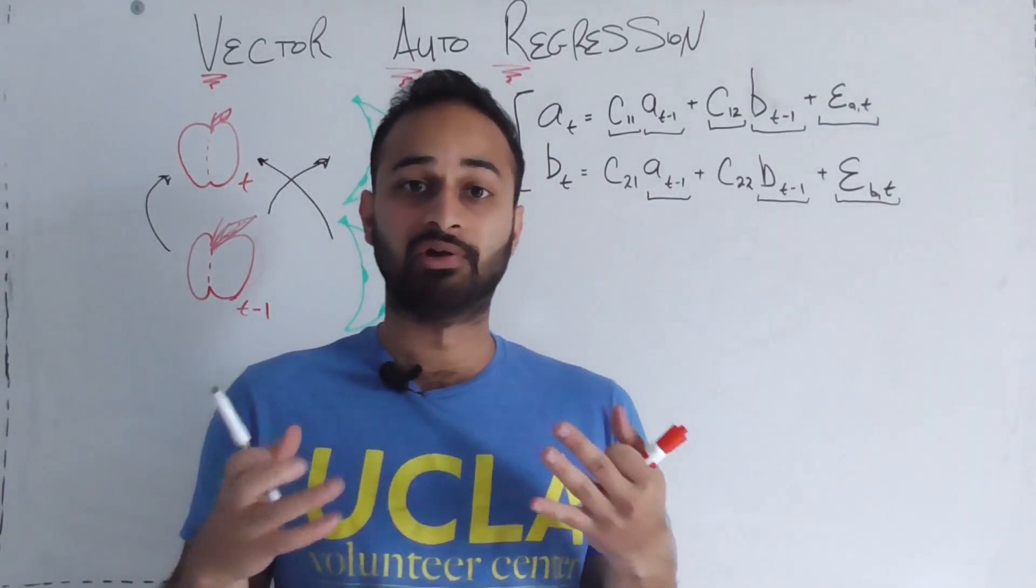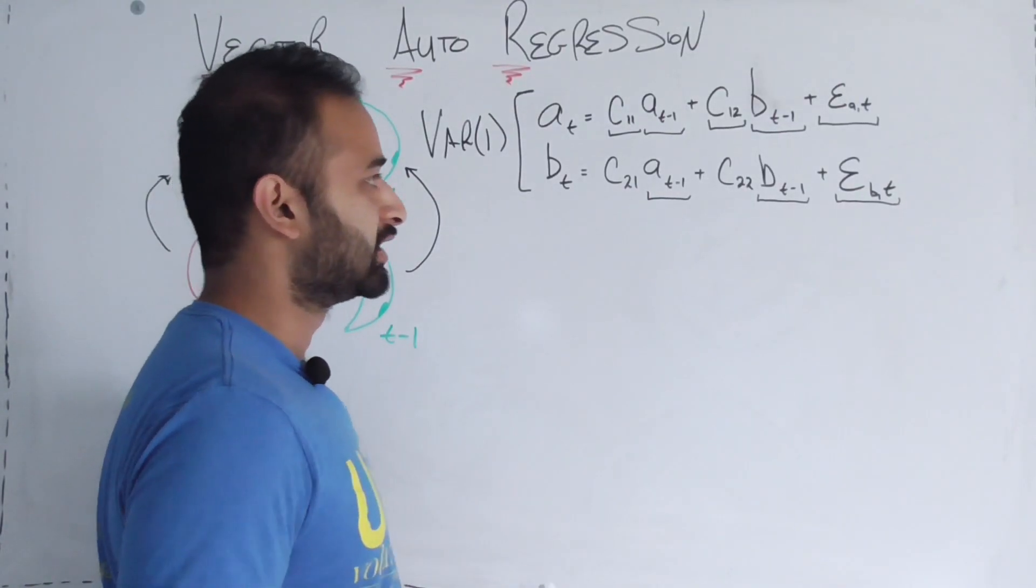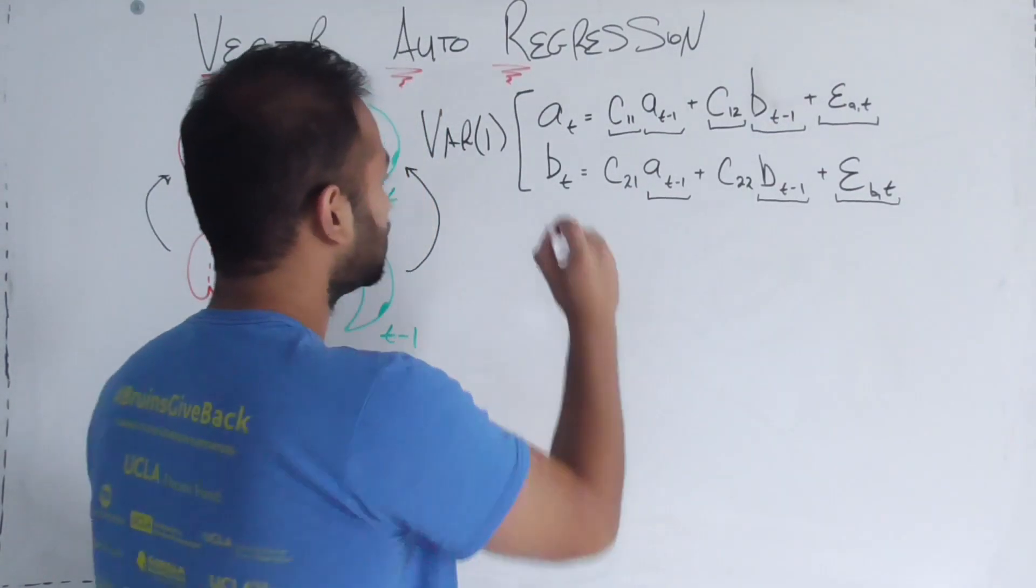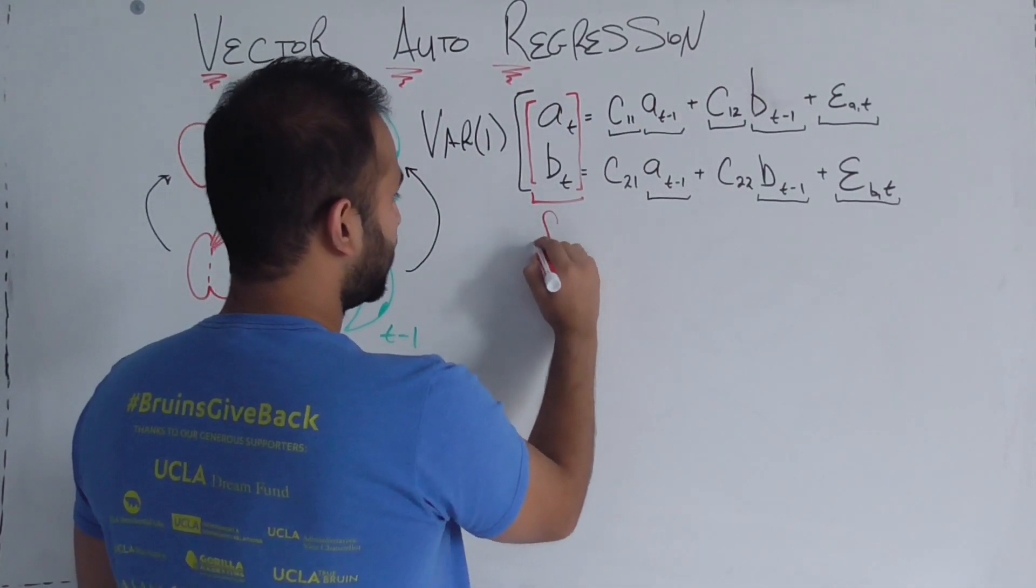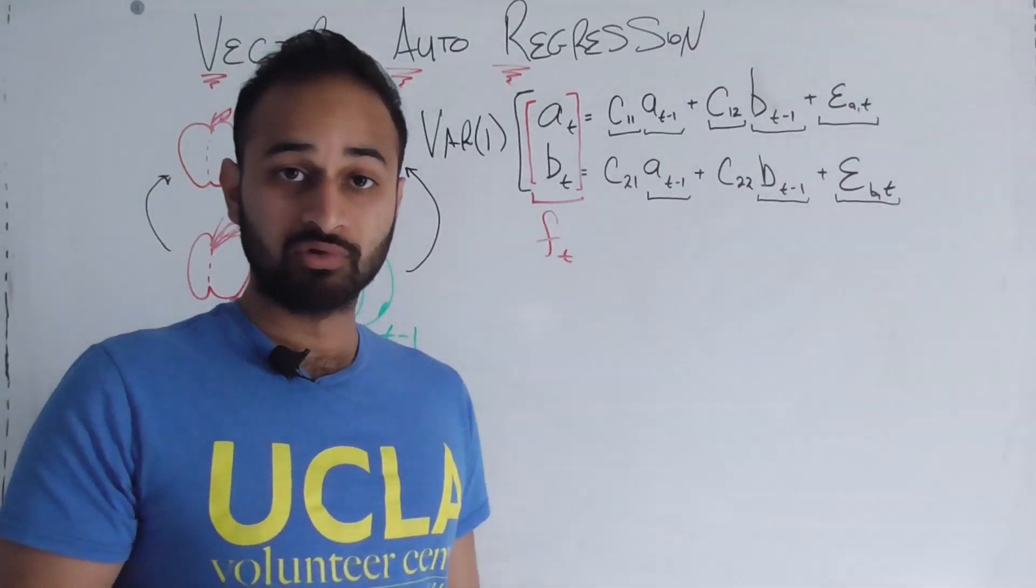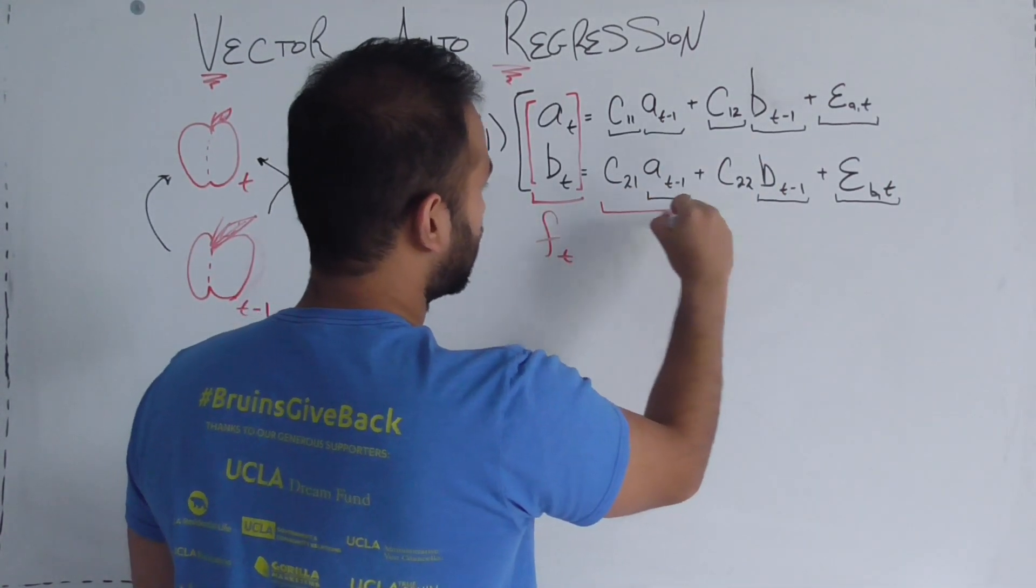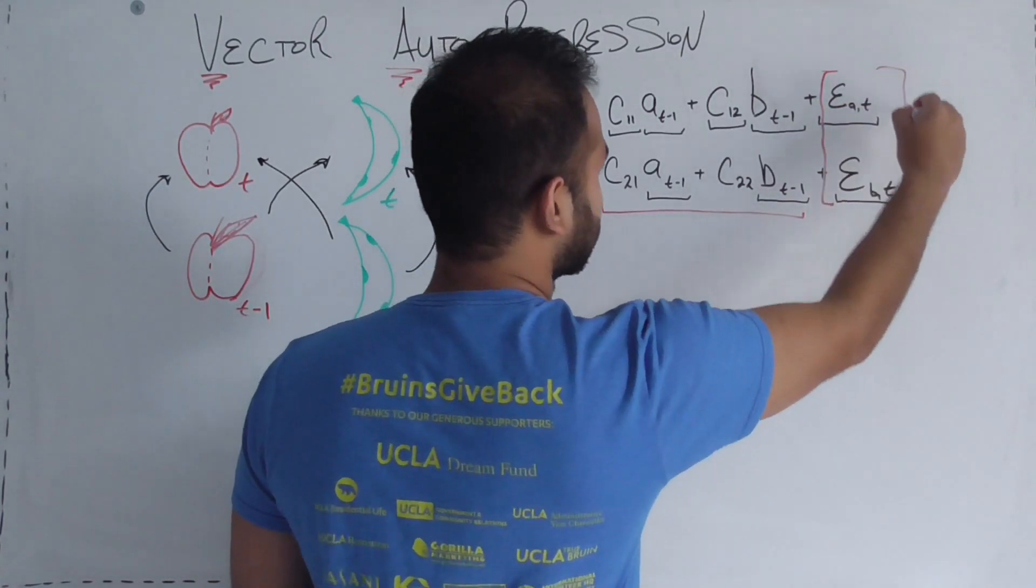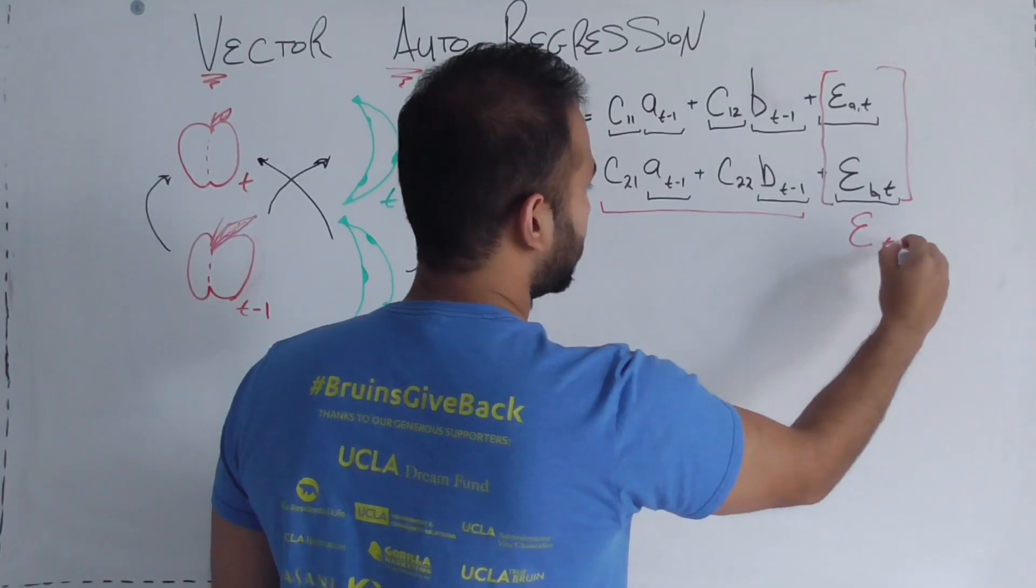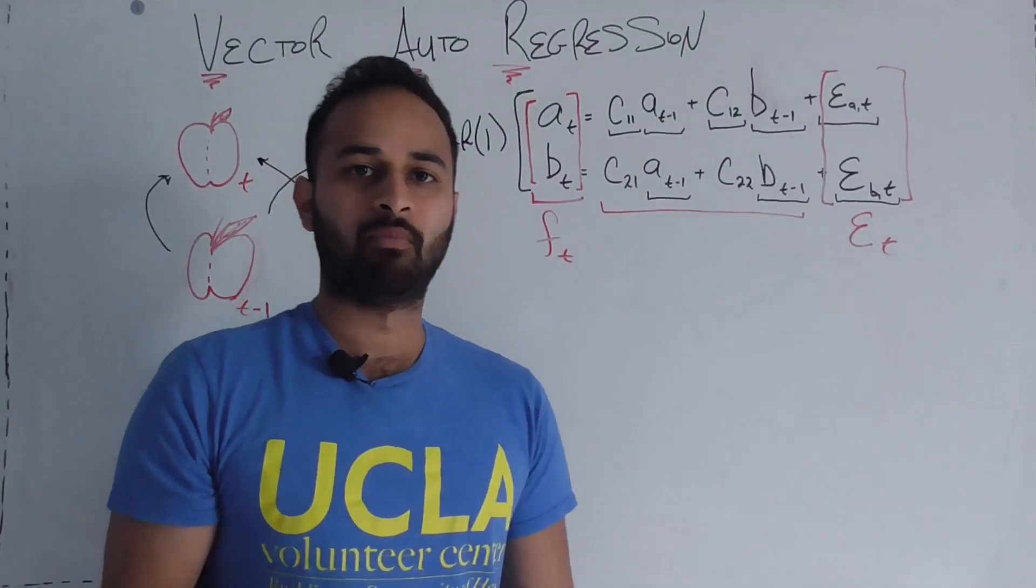The more complicated the equations get, the more need we have to put this in a more compact form that's easier to manipulate. Here's how we're going to do that using vectors. This lends itself very nicely to a vector formulation. We can put a sub t and b sub t as one vector which we'll just call f sub t, f being for fruit. Again, these epsilons can live together in one common epsilon sub t vector.